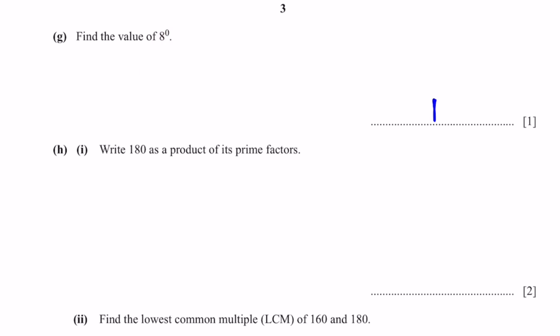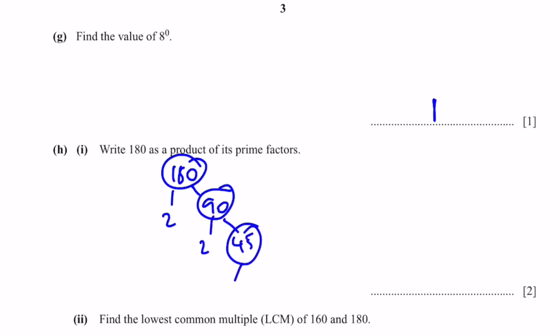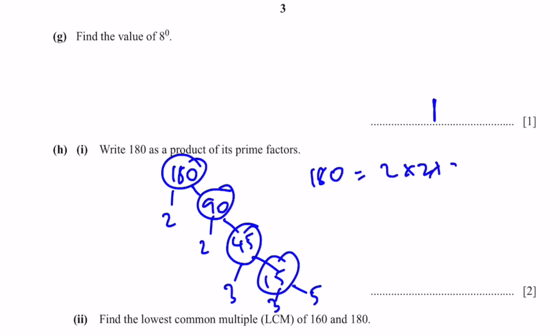Part H, question 1: Write 180 as a product of its prime factors. Using a factor tree: 180 = 2 × 90 = 2 × 2 × 45 = 2 × 2 × 3 × 15 = 2 × 2 × 3 × 3 × 5. This can be written as 2² × 3² × 5.